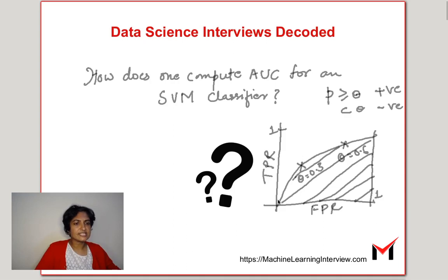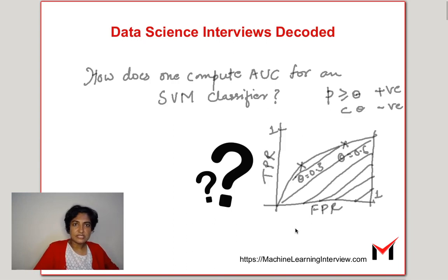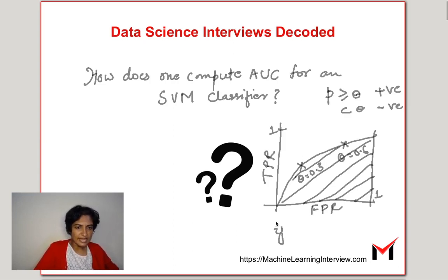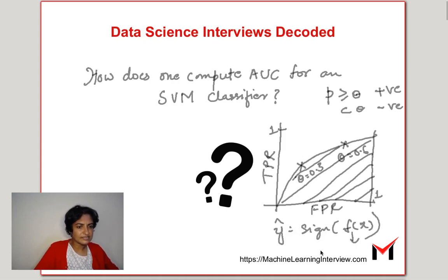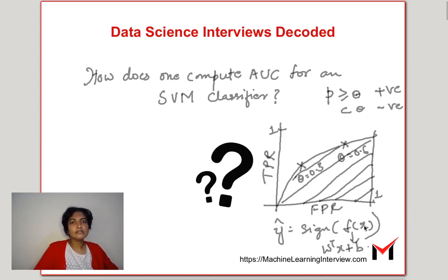Now, if we take a classifier such as an SVM, we cannot directly draw the ROC curve because the outcome of the SVM is a +1 or a -1 — it is the class label itself and not necessarily a probability. The output is of the form y-hat equals sign of f(x), where f(x) is typically something like W-transpose x plus b, a hyperplane in the case of an SVM. So, how do we compute a ROC curve and the AUC metric from this?